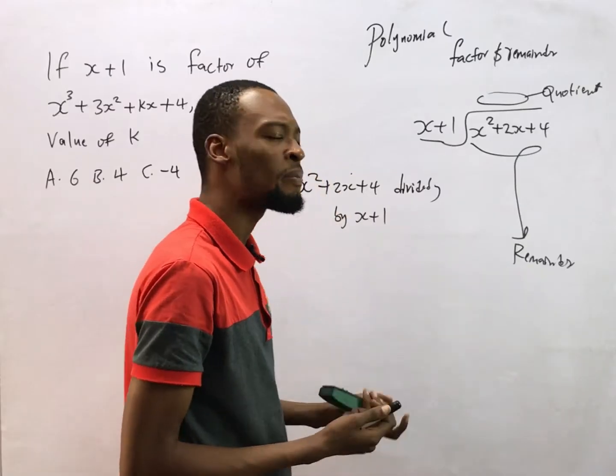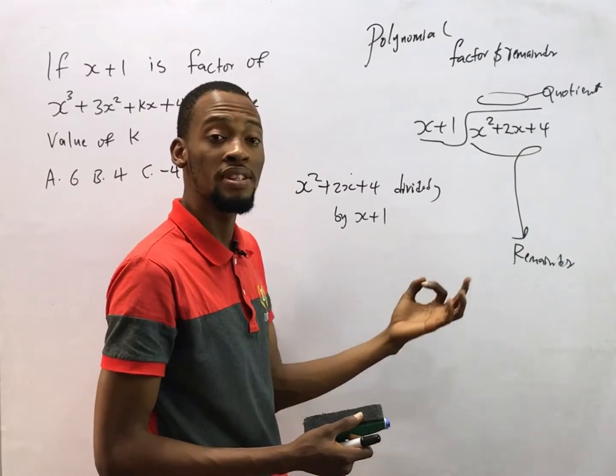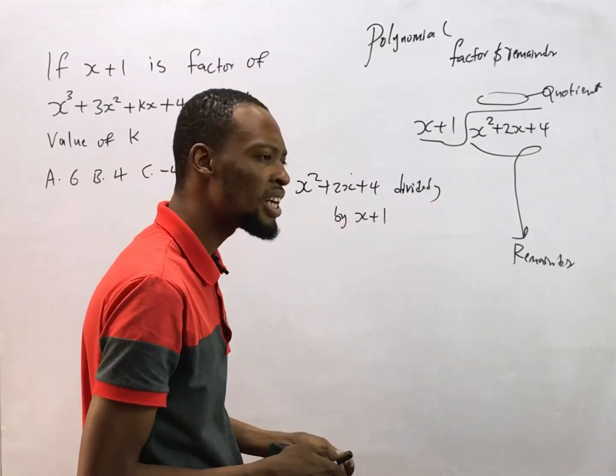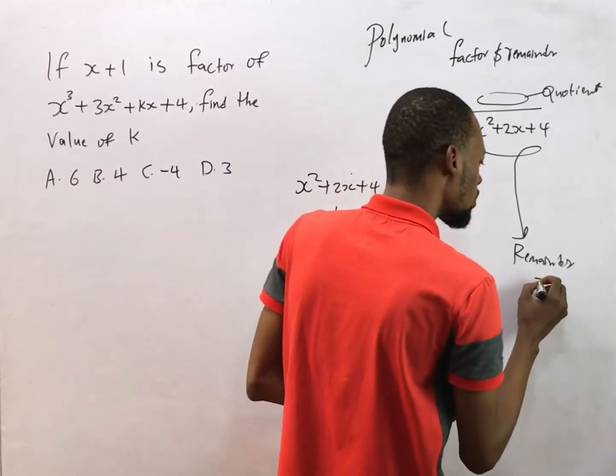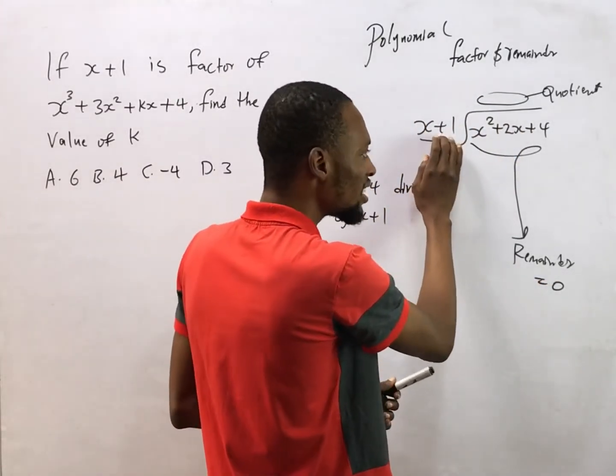Now this is the remainder. Remainder can either be a whole number or it can also be zero. If you solve a polynomial and the remainder equals zero, this implies that this guy that is dividing is a factor of this polynomial.